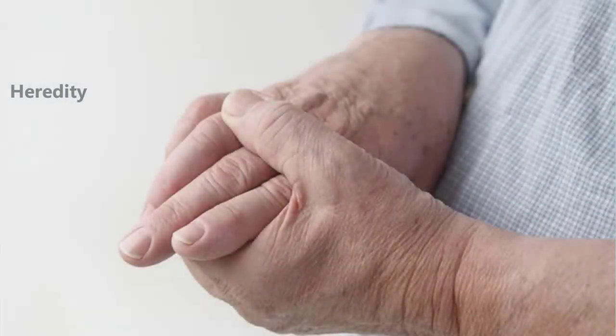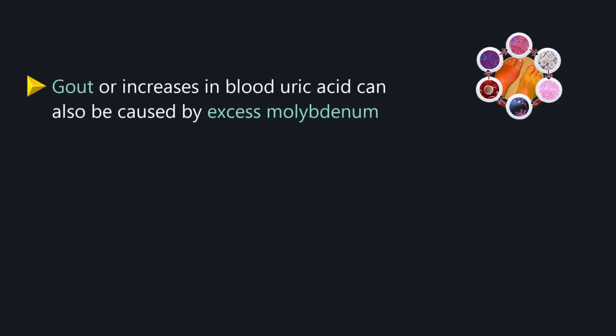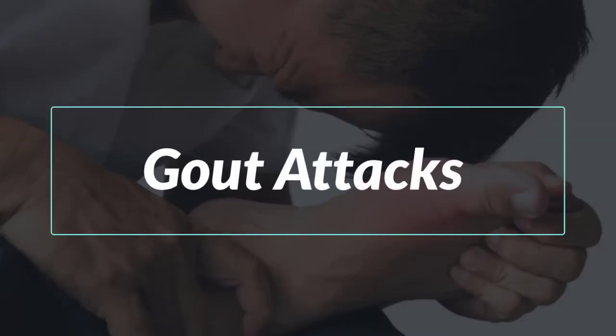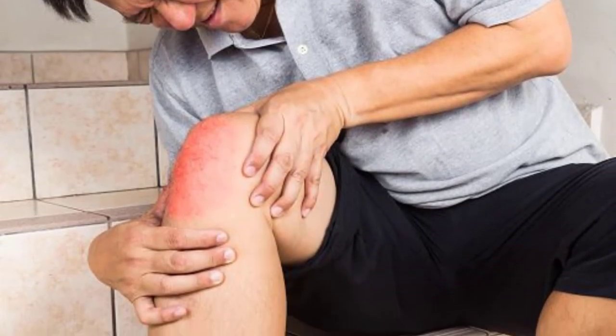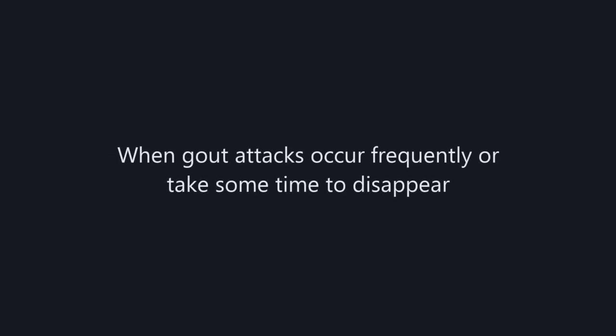In some cases, gout is caused by heredity, eating habits, and environmental exposures. Increases in blood uric acid can also be caused by excess molybdenum — if you work in milling, paints, mining, lubricants, fertilizers, or armor plating, these areas are high in molybdenum. Gout attacks occur for a short time but are quite painful. When they occur frequently or take a long time to disappear, they can weaken, deform, or destroy your joints.